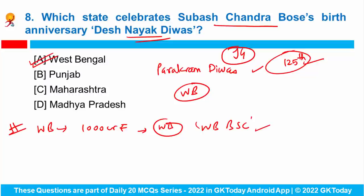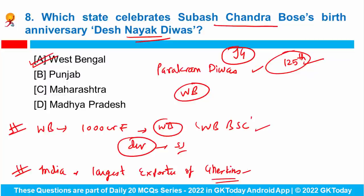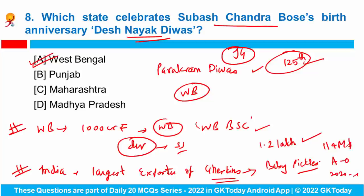The World Bank loan is being given for several development projects related to social security. India has emerged as the largest exporter of Gherkins in the world — these are small cucumbers also called baby pickles. India exported around 1.2 lakh metric tons of this product with a value of 114 million dollars during April to October 2021.